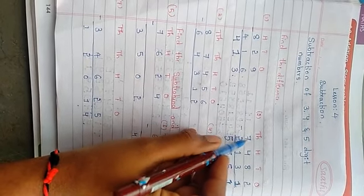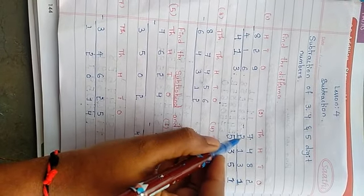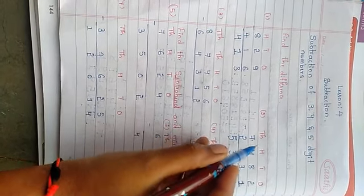See, in addition we used to add 2 plus 7 or 7 plus 2, but here we can't subtract 2 minus 7. We have to start from minuend minus subtrahend.